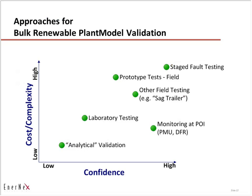When we talk about renewable plant model validation for significant grid disturbances — large-signal events where voltage might change by 25, 30, or 40 percent rather than a few percent — you get deeply into the control operation of the plant and potentially other equipment like static VAR compensators. In terms of validating the entire plant from the outside, there are some ways to approach it.